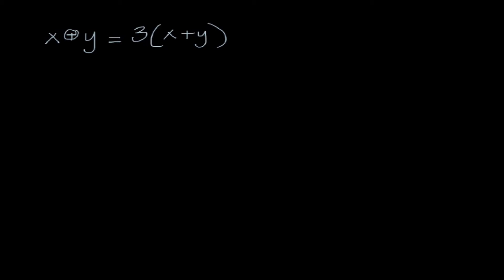The second question is: is this closed under natural numbers? Natural numbers means all counting numbers. If I substitute any two counting numbers into the original equation, will the output always be a counting number? We have addition and multiplication here — adding two counting numbers always gives a counting number, and multiplying a counting number by 3 always gives a counting number. If I had seen subtraction or division I would say no, but my answer this time is yes.